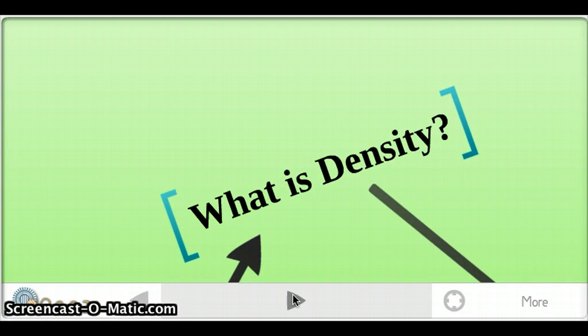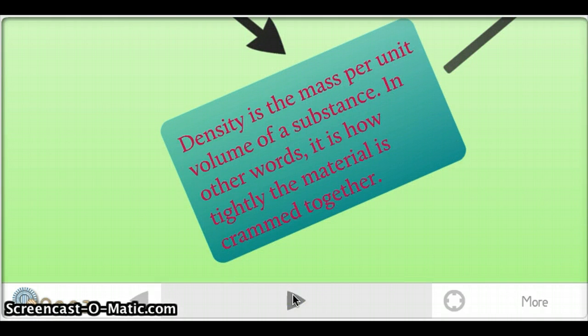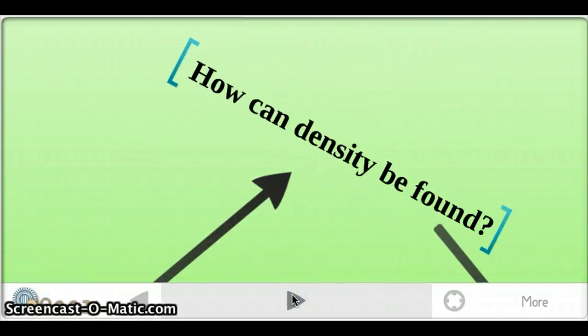What is density? Density is the mass per unit volume of a substance. In other words, it is how tightly the material is crammed together.